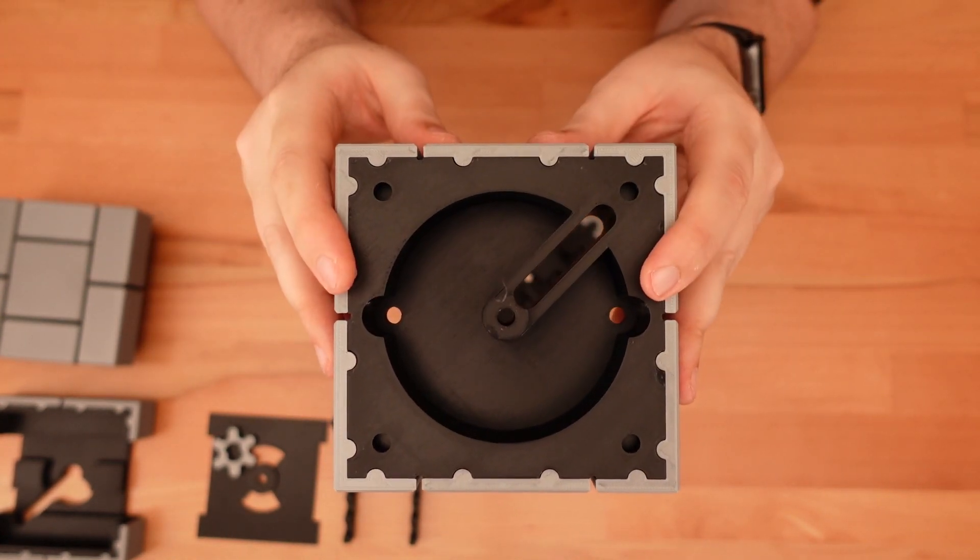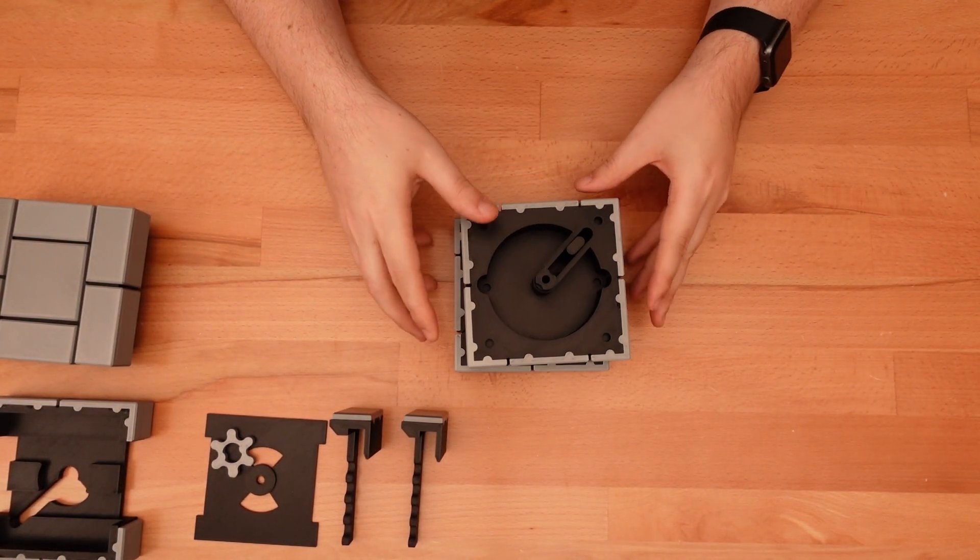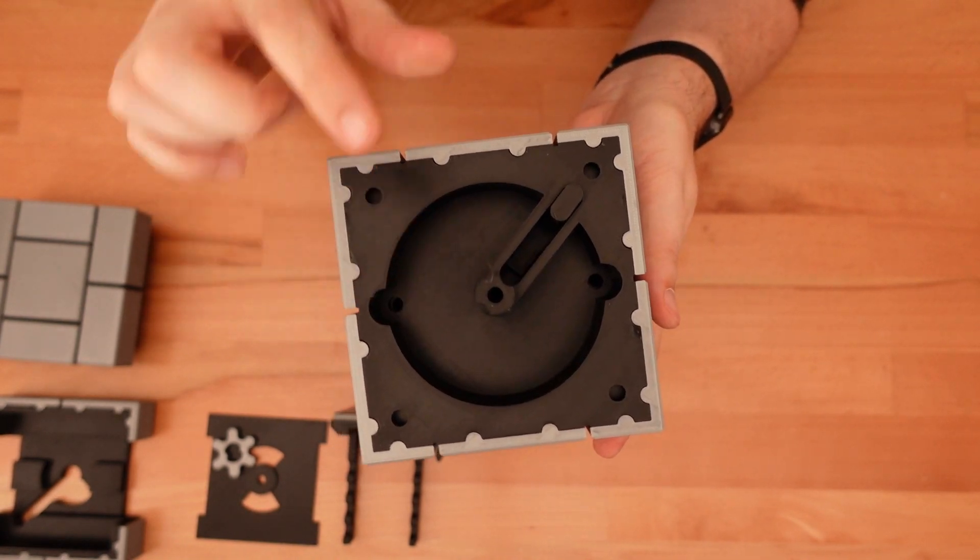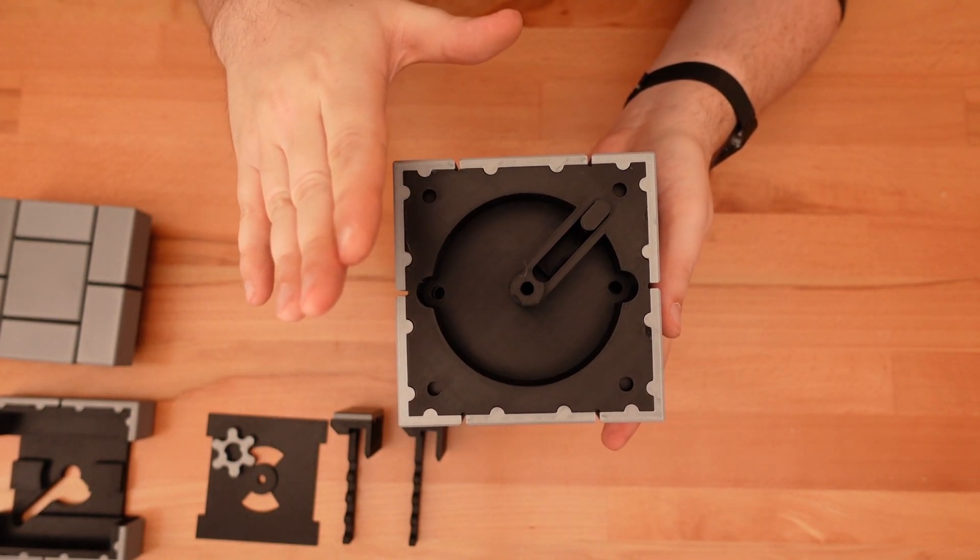Level two is a lot easier to assemble. All we have to do is set it on top of level one. Like this. Because of this little sliding piece that pokes out from level one, there's only one possible orientation that this will fit.